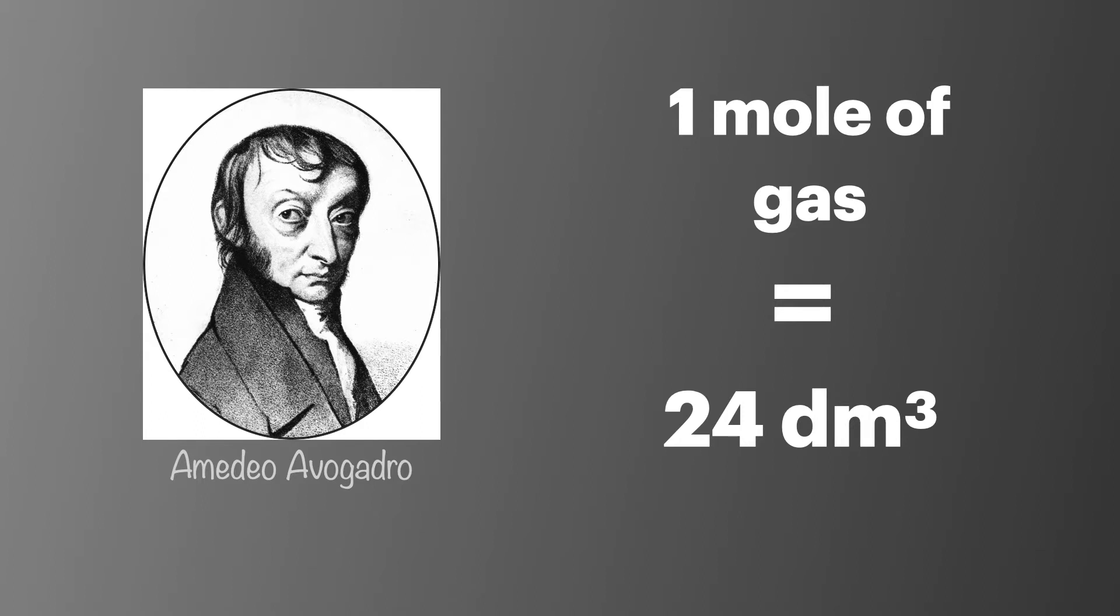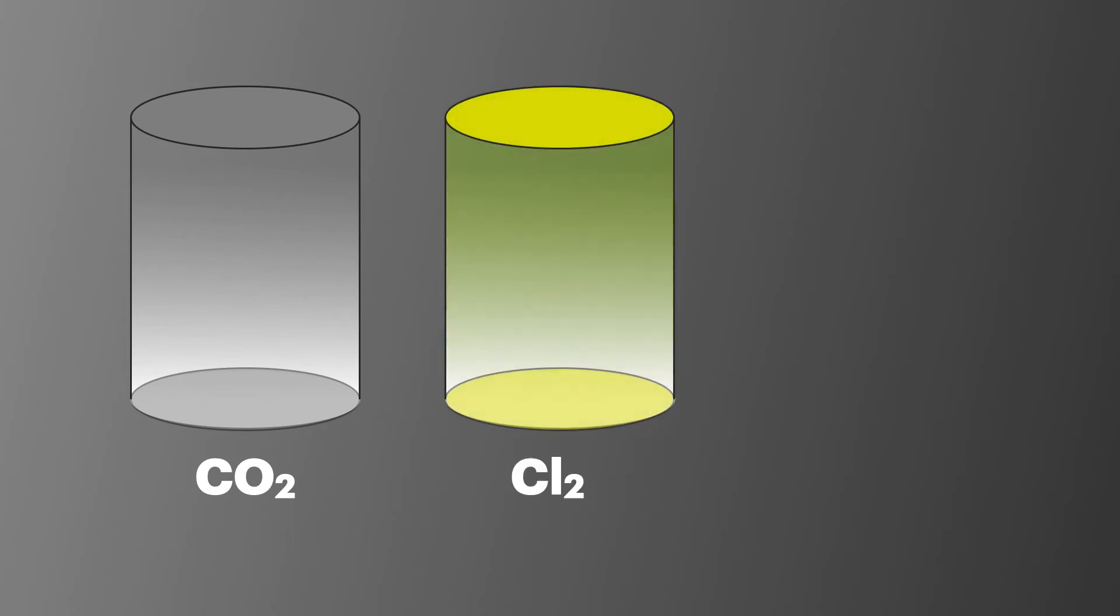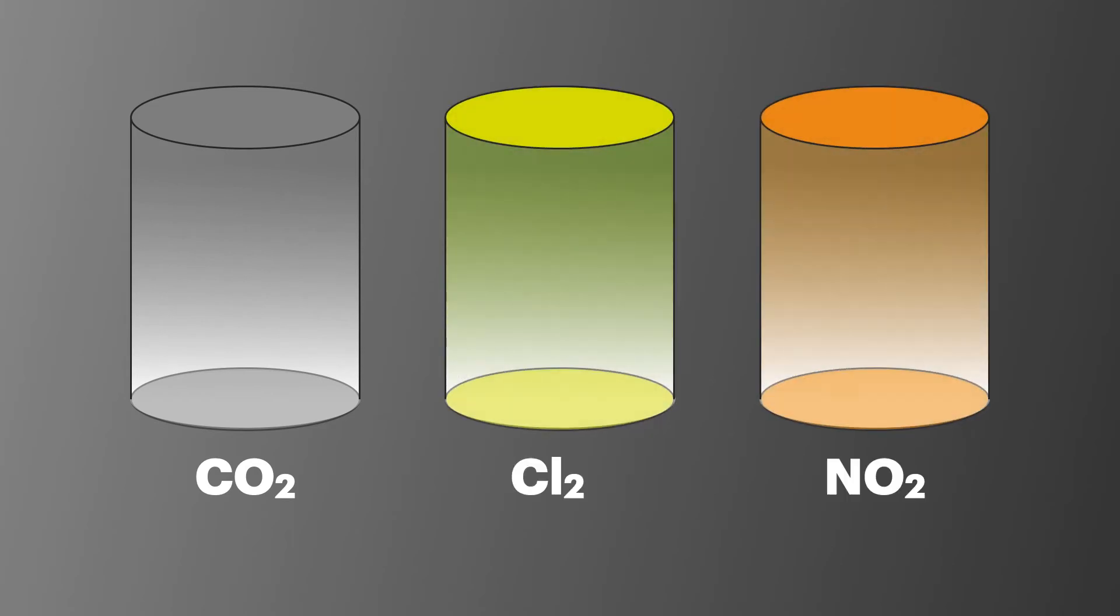This means that the type of gas does not have an impact on how much volume the gas occupies. So one mole of carbon dioxide occupies the same volume as one mole of chlorine, which has the same volume as one mole of nitrogen dioxide. This is true for all gases.